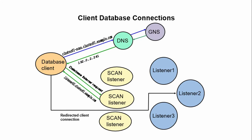The database instance nodes cross-register only with known scan listeners, also sending them per-service connection matrix. The scan known to the database server may be profiled data or stored in Oracle Cluster Registry.